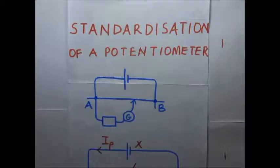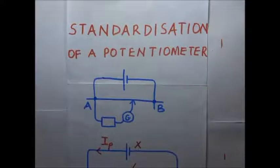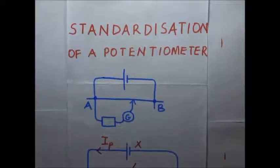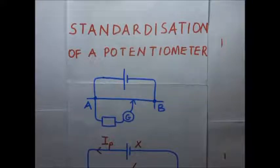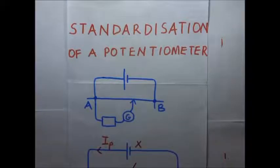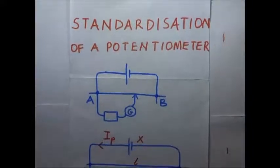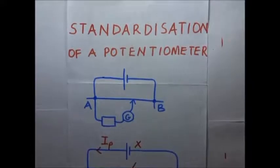Before we get into the details of standardization of a potentiometer circuit, let us remind ourselves of a few key definitions. An open circuit means there is no current flowing out of the cell. A cell is said to be in a closed circuit when some current is being drawn out of it. In reference to a potentiometer, we look at the potential difference across the balance length as being equivalent to a cell in either a closed circuit or an open circuit.